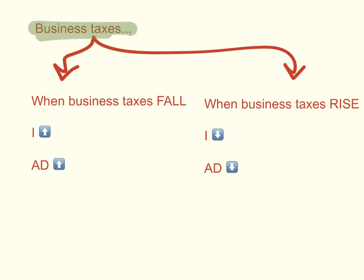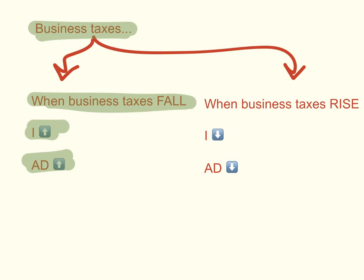Another factor is business taxes. When business taxes fall — say the government wants to encourage businesses to produce more and cuts corporate taxes — investment spending will increase and aggregate demand will increase, shifting the aggregate demand curve to the right. The opposite is true: when business taxes rise, investment spending will fall and aggregate demand will decrease. Businesses invest either from money they borrow or from retained profits, so if business taxes rise, they have less retained profits to invest, leading to a decrease in investment spending.